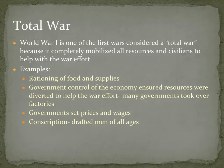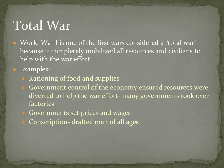Governments of many countries took over the economy. Countries like Britain, which had a market economy, had the government play a much larger role in controlling what was produced during the war — taking over factories that produced household items and turning them into factories producing military supplies. Governments also set prices and wages to control the economy, and conscription — mandatory military service — was another form of government control.